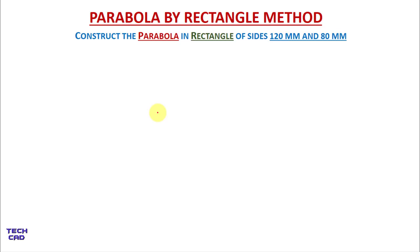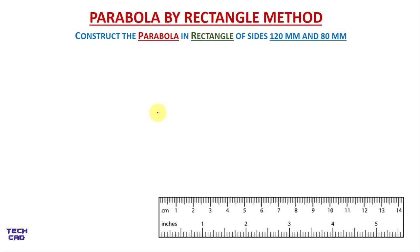Hello everyone. In this tutorial we are going to make a parabola by rectangle method. We are going to make a parabola when we have a rectangle of sides 120 mm and 80 mm. First of all we are going to make a rectangle, and in between that rectangle we are going to make a parabola.